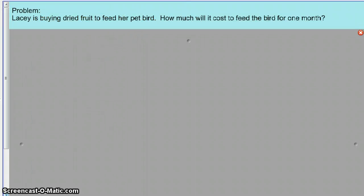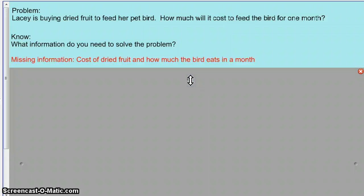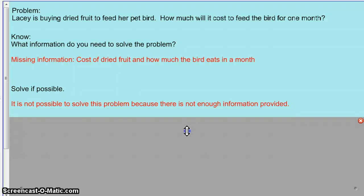For this problem, you will not need a problem-solving recording sheet. Please listen. Lacey is buying dried fruit to feed her pet bird. How much will it cost to feed the bird for one month? What information do we know to solve the problem? Well, we don't. We don't know the cost of the dried fruit and how much the bird eats in a month. We need to know both of those to be able to do this problem. So this problem is not possible to solve. So therefore, no problem-solving recording sheet was needed.